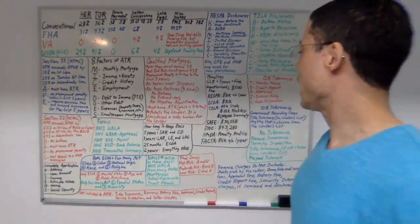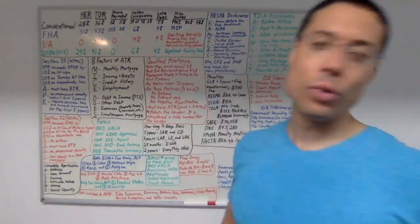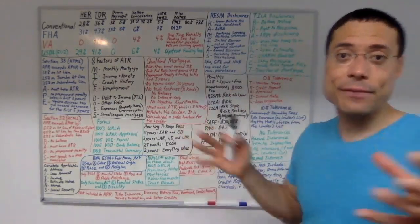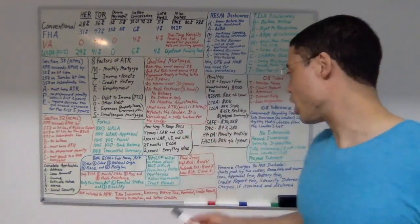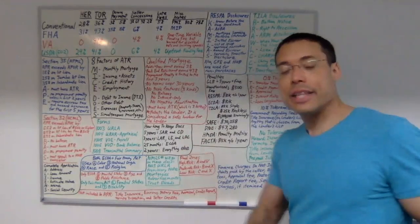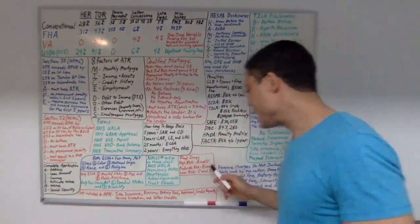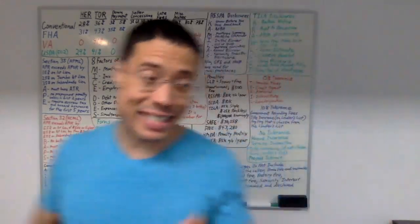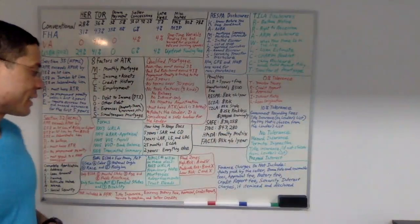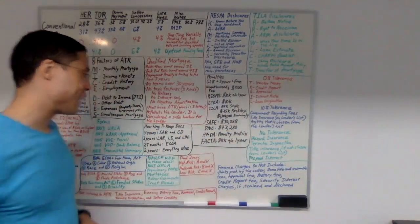Let's talk about flood zones. The high-risk flood zones are A and V. The moderate-risk flood zones are B and X. And the low-risk flood zones are C and X.